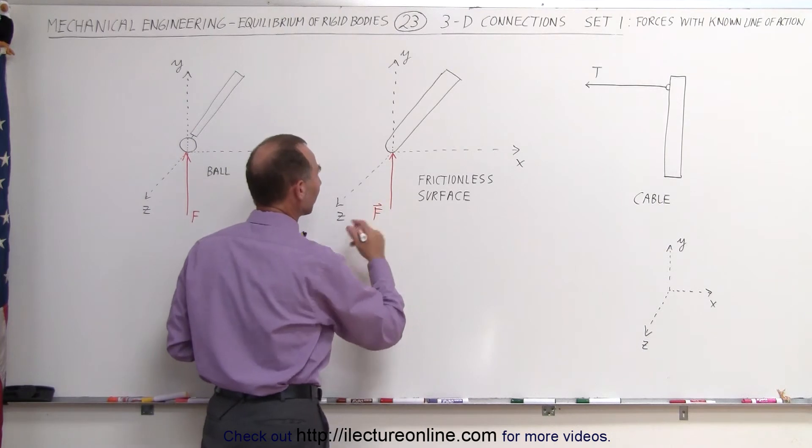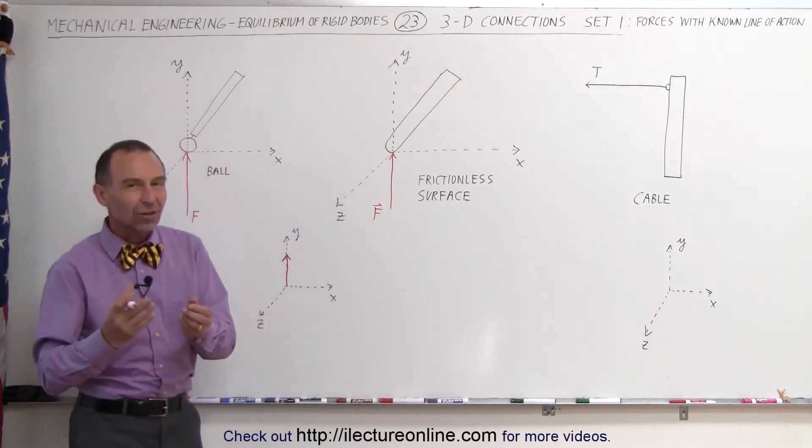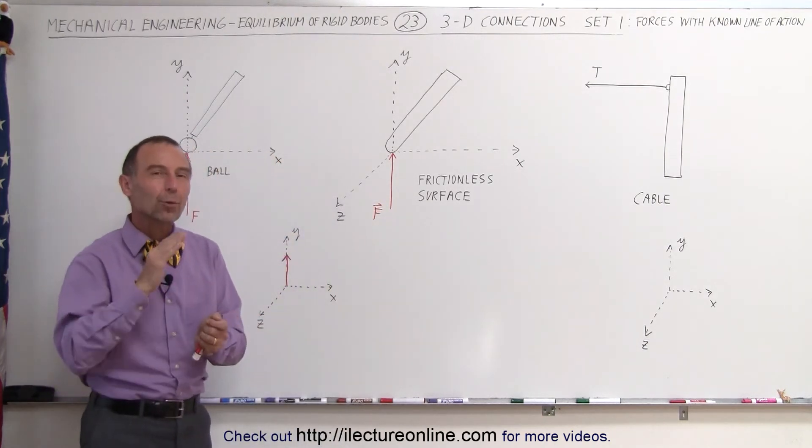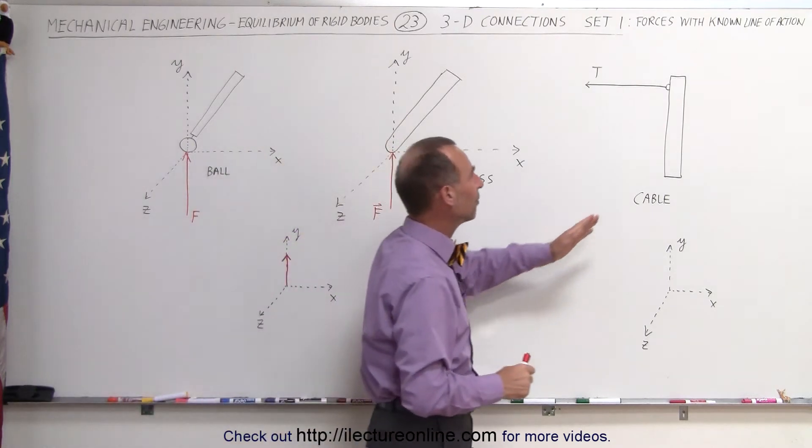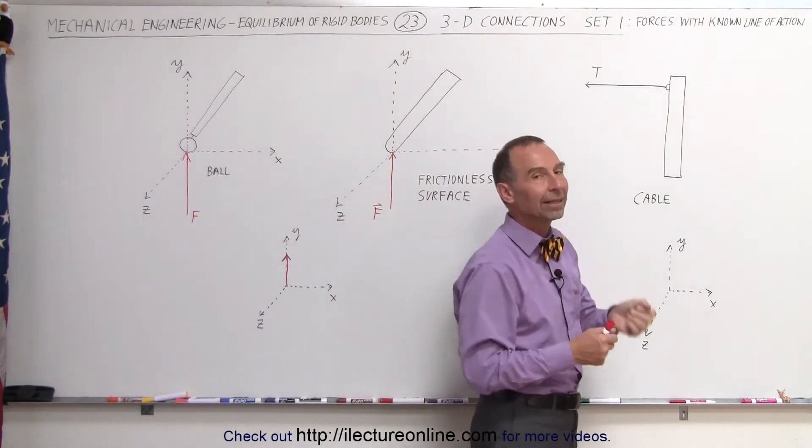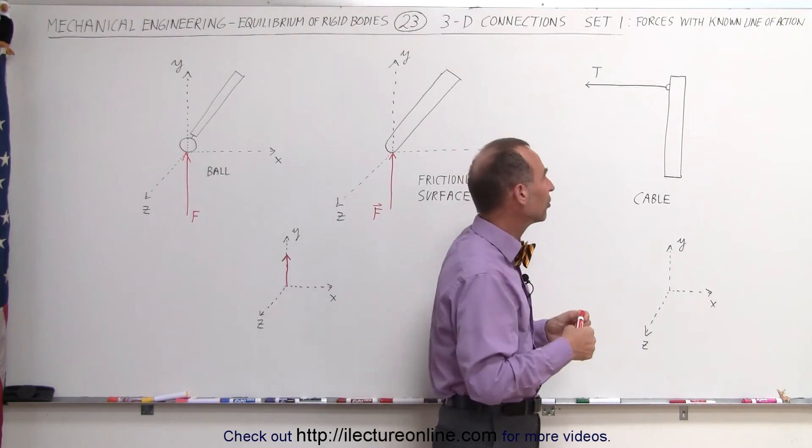A third example of something like that - in this case it's not directly upward but it's again directly away from the surface. Here we have a post with a hook and a cable attached to it, and the cable is being pulled from one direction.